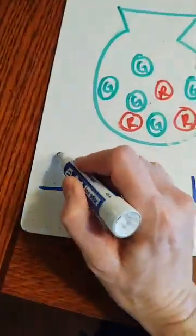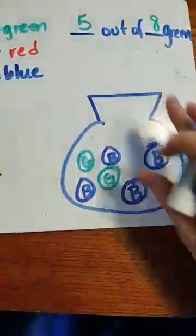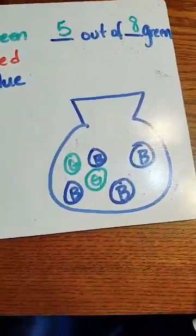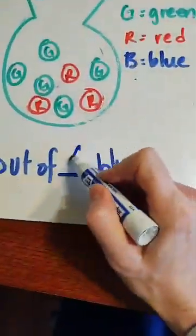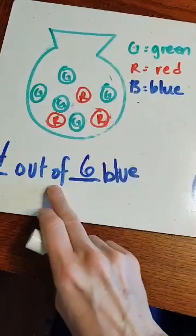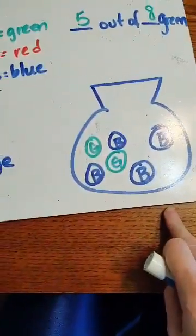You got it. Four out of, four out of how many? Four out of the whole, or four out of the total. So there is a total of six. So four out of the six are blue. Okay?